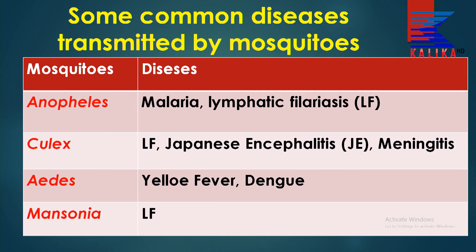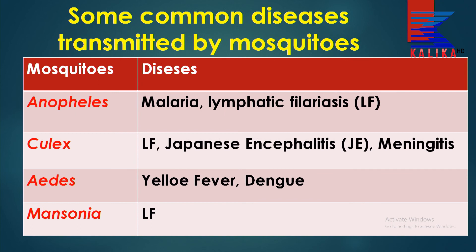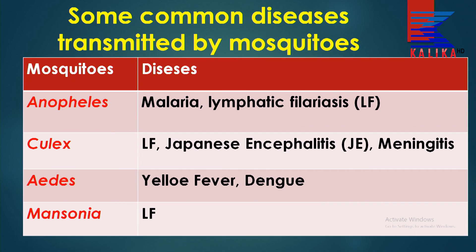Some common diseases are transmitted by mosquitoes. Anopheles transmits malaria and lymphatic filariasis. Culex transmits lymphatic filariasis, Japanese encephalitis, and meningitis. Aedes transmits yellow fever and dengue. Mansonia transmits lymphatic filariasis and elephantiasis, known as Hathi-Paile in Nepali.